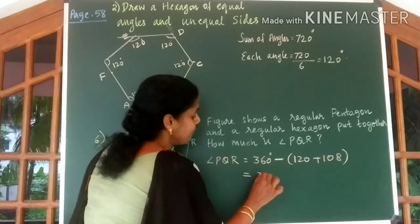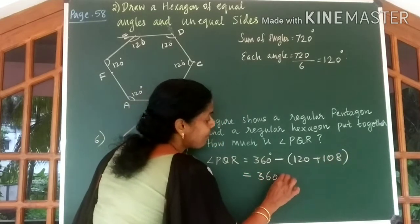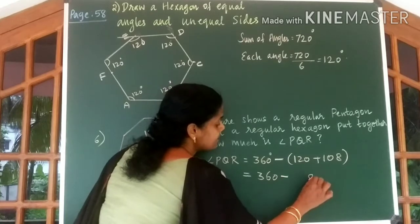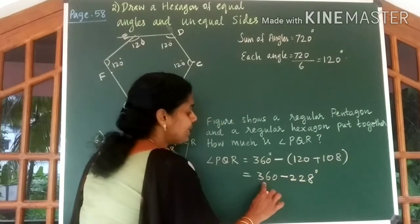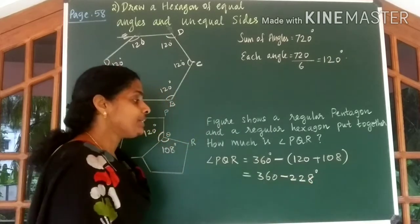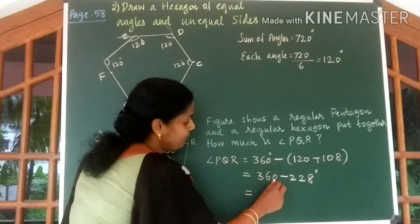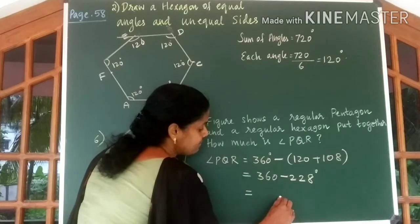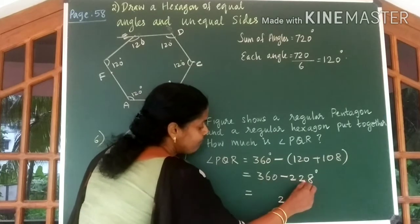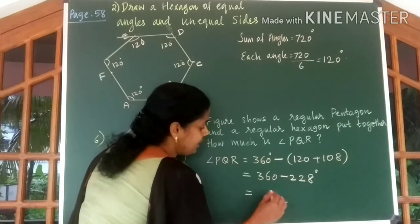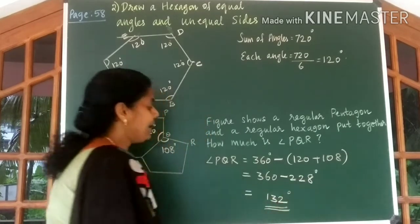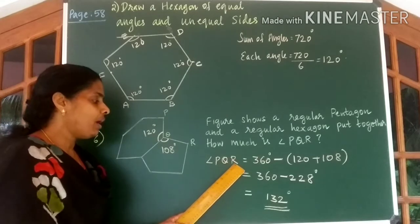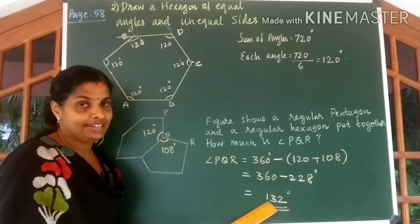That is equal to 360 minus 228. From 360 you had to subtract 228, which is equal to 10 minus 8 gives you 2. 5 minus 2 gives you 3. E minus 2 gives you 1. So we can say angle PQR to be equal to 130 degrees.